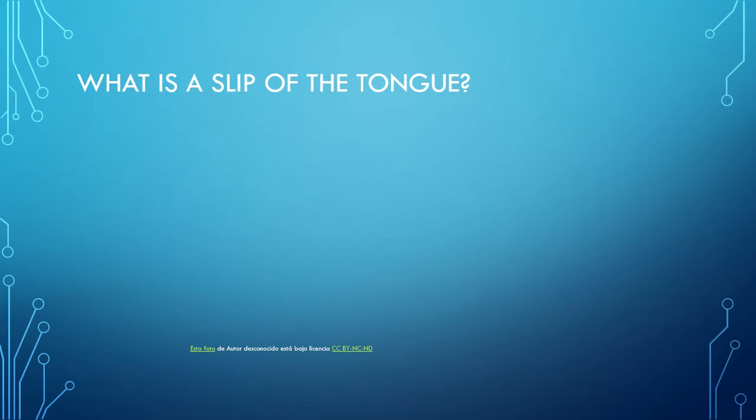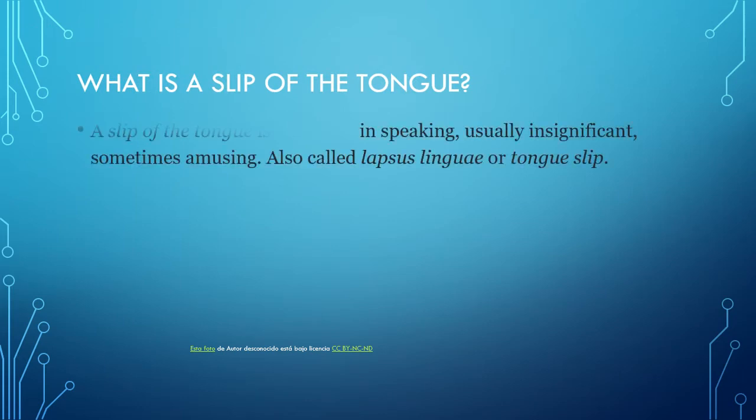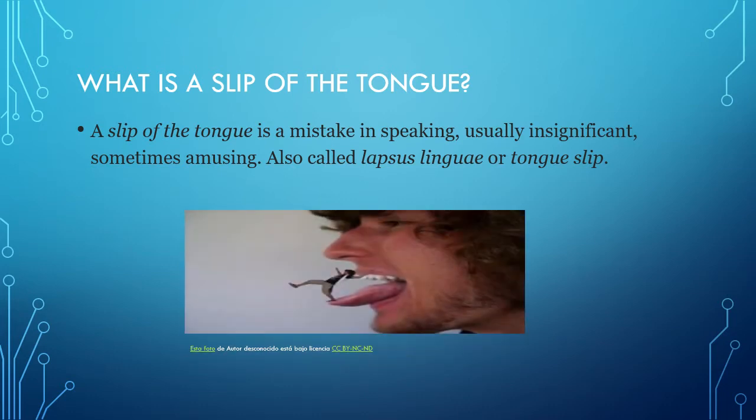What is slip of a tongue? Well, slip of a tongue is a mistake in speaking, usually insignificant, sometimes amusing, also called lapsus linguae or tongue slip.